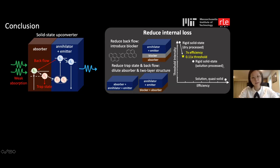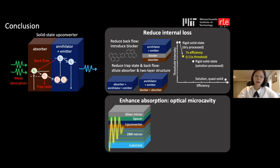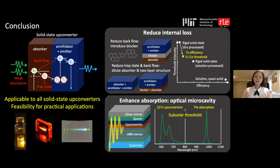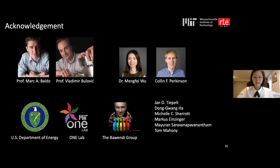In conclusion: to reduce internal loss, introduce a blocker material to reduce backflow and keep the annihilator and absorber in separated films while diluting the absorber, reducing both trap state formation and backflow. This approach improved dry-processed solid-state upconverters towards solution-processed performance. To enhance optical absorption, placing the upconverter in an optical microcavity gave more than 200× stronger upconverted emission and reduced required excitation intensity to subsolar flux, making these systems far more feasible for practical applications.